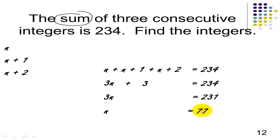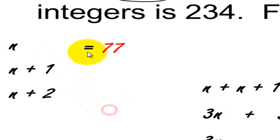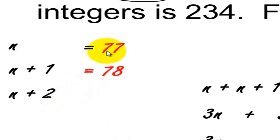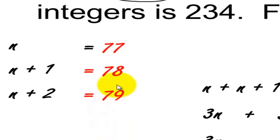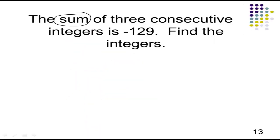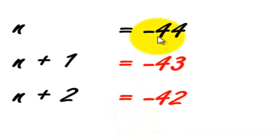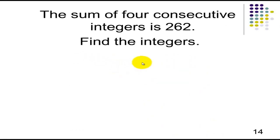So n is our first integer, 77. To get the next integer, add 1 to get 78, and add 2 to get the third integer, 79. This will be the answer. For the practice problem, the answer will be negative 44, negative 43, negative 42.